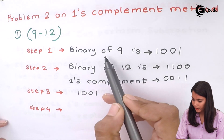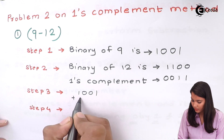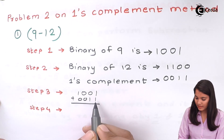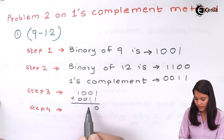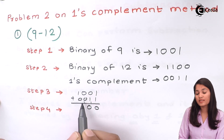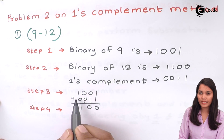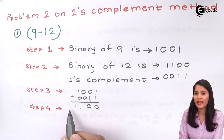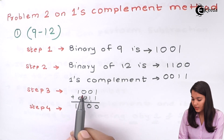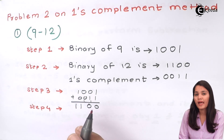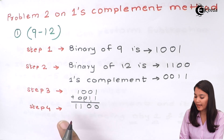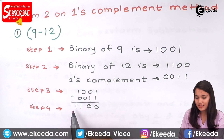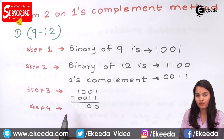1 0 0 1 is the binary of 9 from step 1, and 0 0 1 1 is the one's complement of 12 from step 2. Now let's add these two. 1 plus 1 gives us 0 with carry 1; 1 plus 1 is again 0 with carry 1; 0 plus 0 is 0; and 0 plus 1 is 1; and 1 plus 0 is 1. If we have 4 digits input and get only 4 digits after addition, carry is absent. We only get a 5th digit if carry is present. In this case carry is not present, so carry is absent.